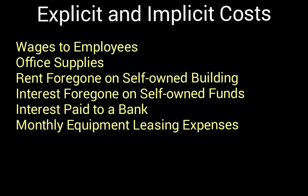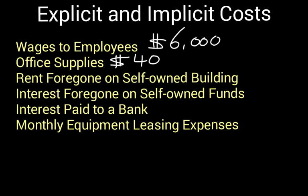Let's take a look at an example a typical business might face. First, wages to employees — let's say the business pays $6,000 per month. Second, office supplies — an average of $400 per month. Third, rent foregone on a self-owned building — the business operator owns the building, and the rent they could have earned if not using it for their own business is estimated at $1,000 per month.